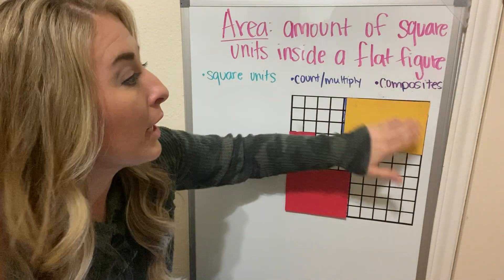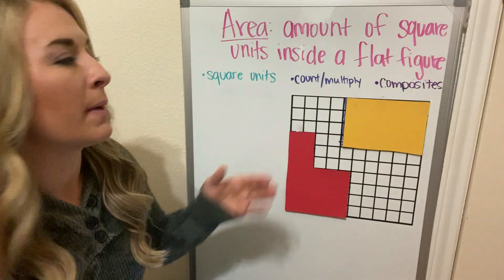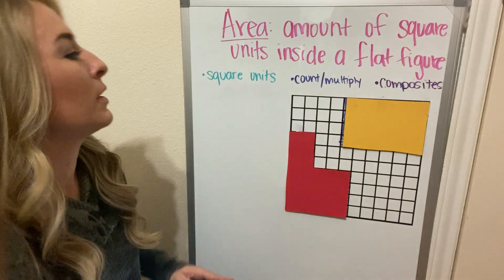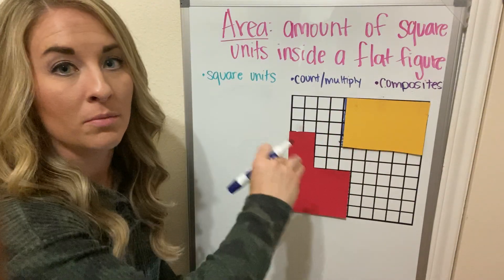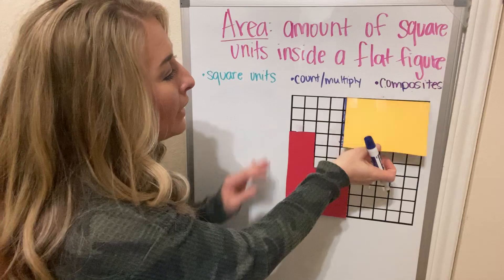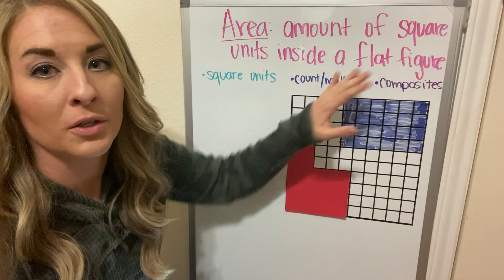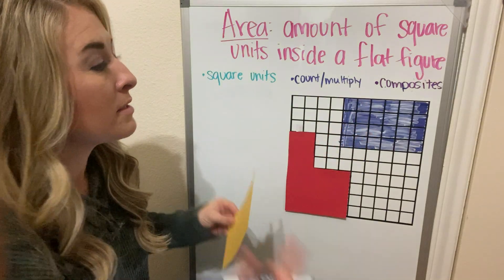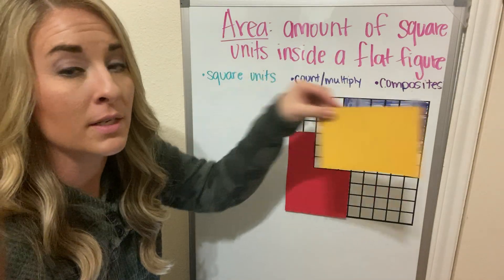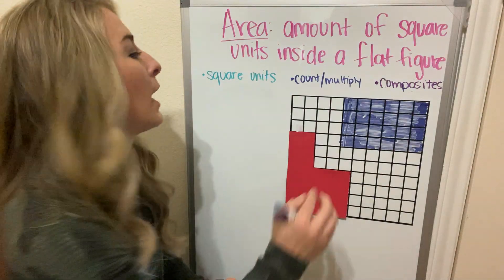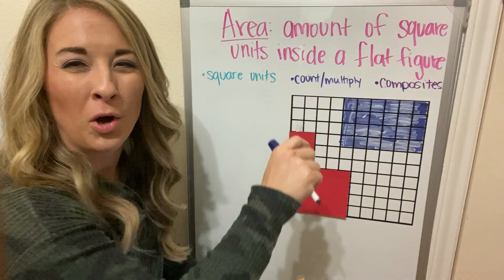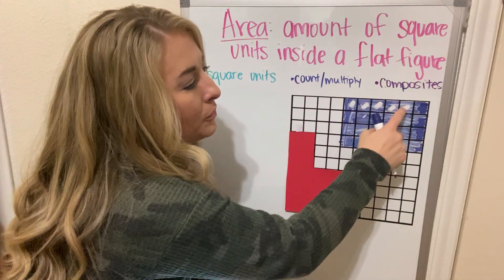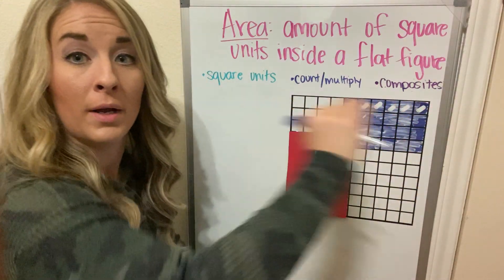To determine area, the simplest way is by counting the squares given to you in a figure. When I look at this yellow rectangle, it doesn't have squares inside yet. But when I lift it, I've already colored the squares it took up — the amount of space it took up. The simplest way to determine the area would be counting these squares. I'm going to mark them as I count so I don't double count. 1, 2, 3, 4, 5, 6 — the top row has 6.